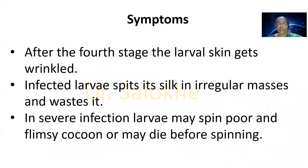After the fourth stage, the larval skin gets wrinkled. Infected larvae spit their silk in irregular masses instead of spinning a uniform thread. In severe infection, larvae may spin a poor and flimsy — that means thin — cocoon, or may die before spinning.